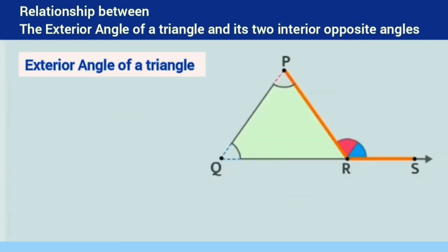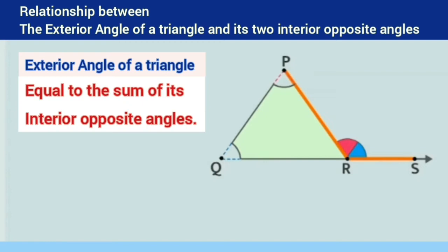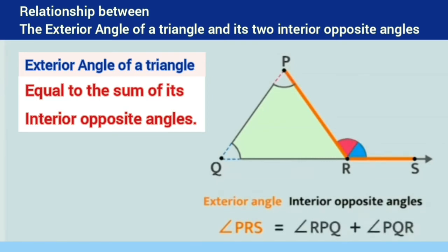What does this tell you? This shows us that the measure of an exterior angle of a triangle is equal to the sum of the measures of the two non-adjacent or opposite interior angles. Which means measure of angle RPQ plus measure of angle PQR equals measure of angle PRS.